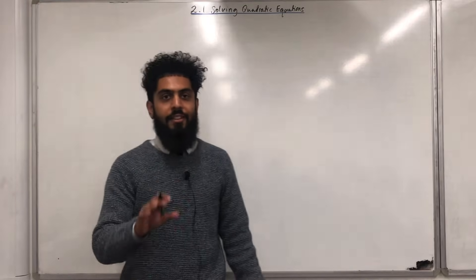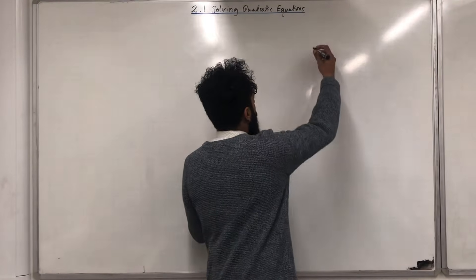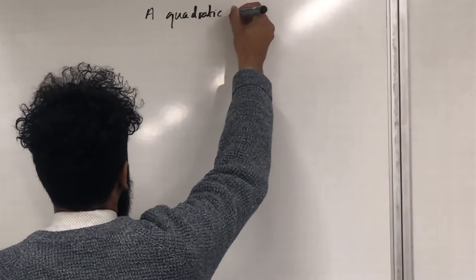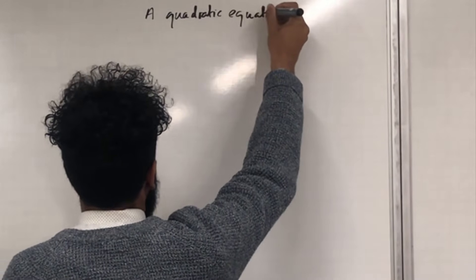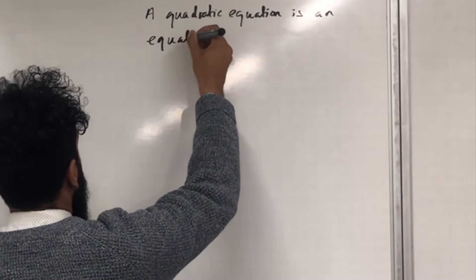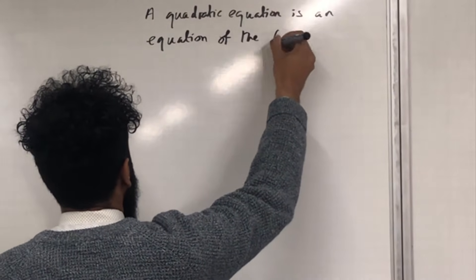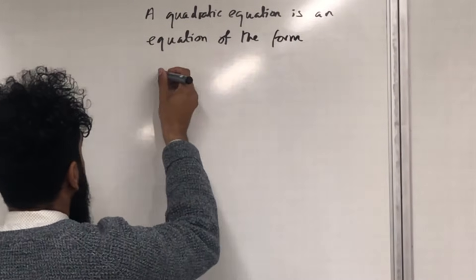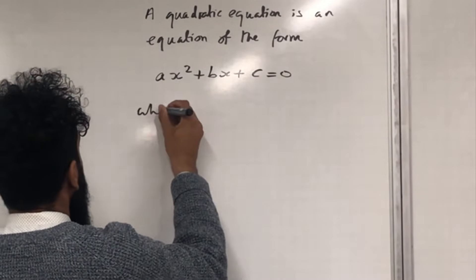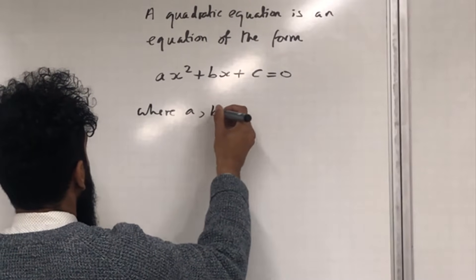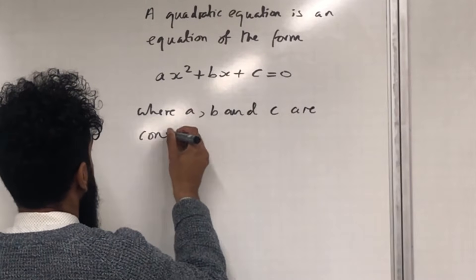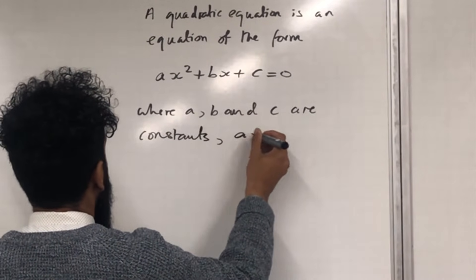I'm going to start off this section by explaining what a quadratic equation is. A quadratic equation is an equation of the form AX² + BX + C = 0, where A, B and C are constants, and A is not equal to 0.